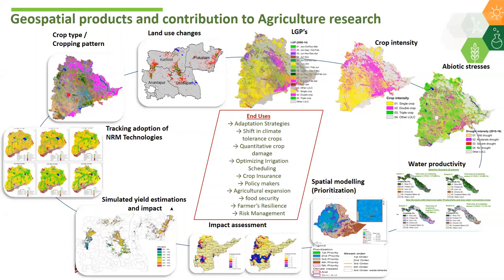Crop type mapping is useful for accurate area estimation of various crops in command areas and dryland areas. The second product is land use land cover change, including major crop types over time. In very vulnerable areas, cropland is changing over the years, so it is very important to monitor how much area is expanding or reducing through spatial-temporal analysis.